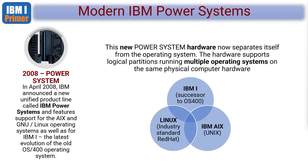IBM i is the latest evolution of the old OS 400 operating system. It looks and feels like OS 400, very familiar on the screens, but with tons of extra power and commands packed in. You can have multiple partitions running different operating systems, one operating system, or multiple versions of the same. For example, to create a test system you just create another logical partition in the hardware and install IBM i on it — so it looks like you've got two IBM i systems, but they're both running on the same piece of hardware.